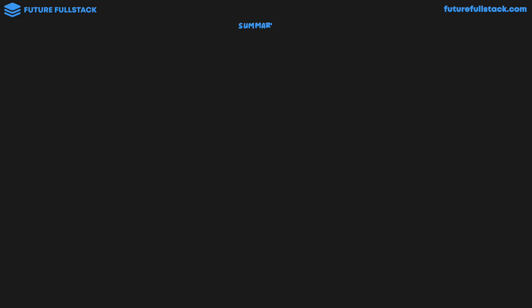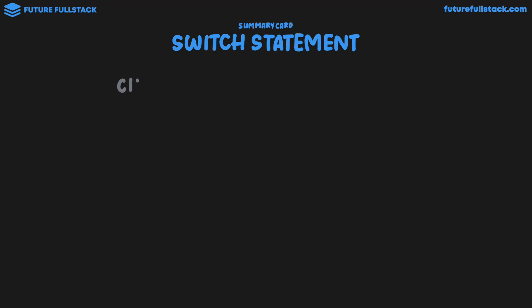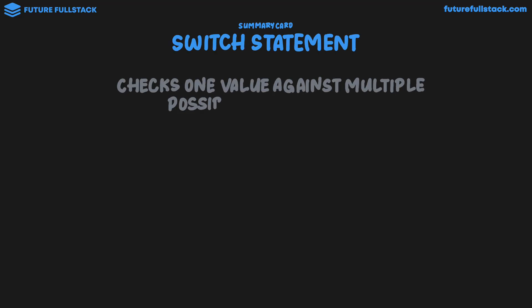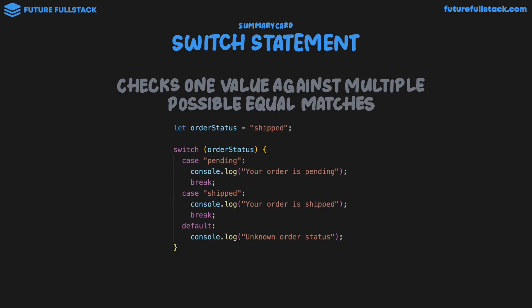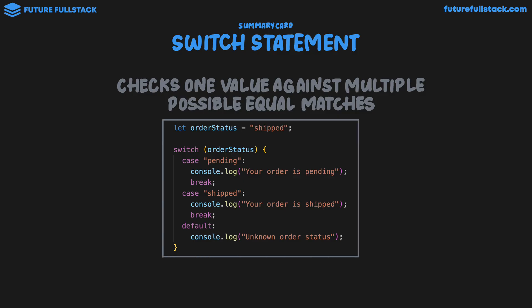Let's wrap up by building a summary card for the switch statement. The switch statement checks one value against multiple possible equal matches. We saw this example of the switch statement where for each case we were comparing the value of order status to each case, where behind the scenes JavaScript is performing a strict equality comparison. So a switch statement is an alternative to if statements using equality-based conditions.